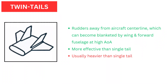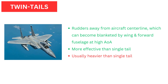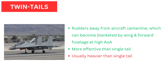Twin Tails: This type is used to position the rudders away from the aircraft's centerline, which can become blanketed by the wing or forward part of the fuselage at high angles of attack. The main reason this type is used is to reduce the height of the tail as compared to a single vertical tail. This configuration is usually heavier than an equal-area single tail, but it is more effective. Many modern fighter aircraft have this type.